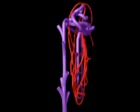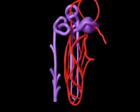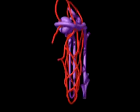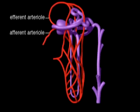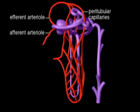Blood reaches the glomerular capillaries through the afferent arteriole. Blood then leaves the glomerulus in the efferent arteriole, which supplies a network of peritubular capillaries. From the peritubular capillaries, capillary loops called the vasa recta extend alongside the loop of Henle.